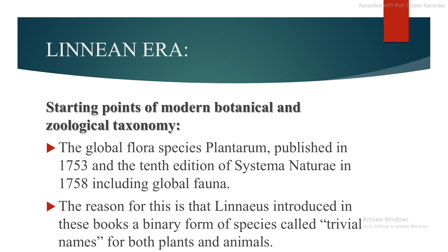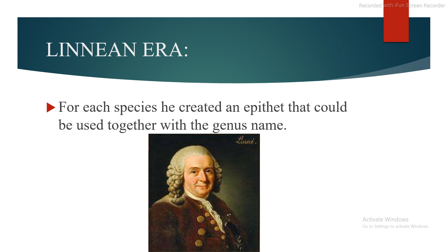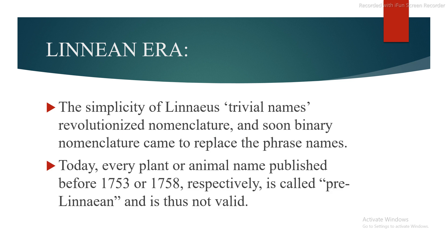The starting points of modern botanical and zoological taxonomy are the Species Plantarum published in 1753. Linnaeus introduced in these books a binary form of species names called trivial names for both plants and animals. For each species, he created an epithet that could be used together with a genus name. The simplicity of Linnaeus's trivial names revolutionized nomenclature, and soon binary nomenclature came to replace the phrase names. Today, every plant or animal name published before 1753 to 1758 respectively is called pre-Linnean and is thus not valid.